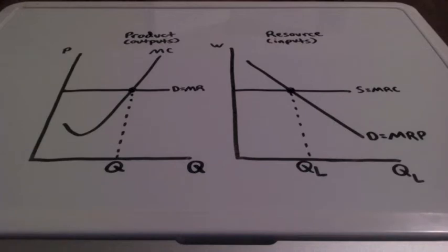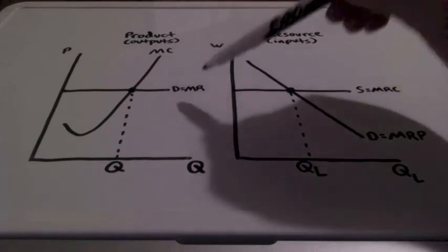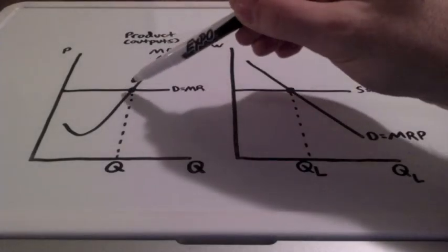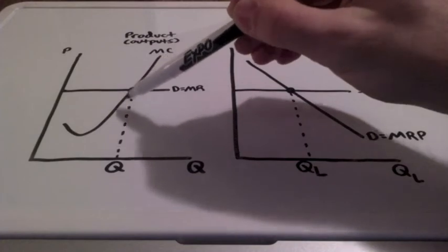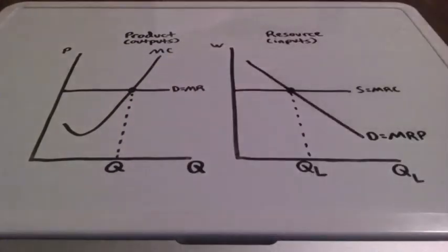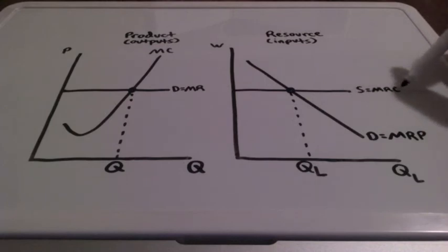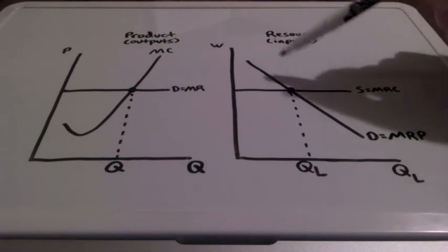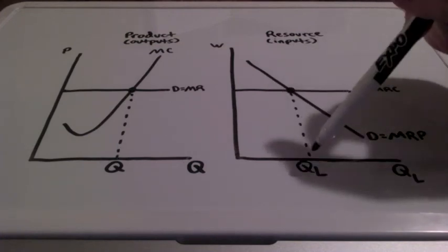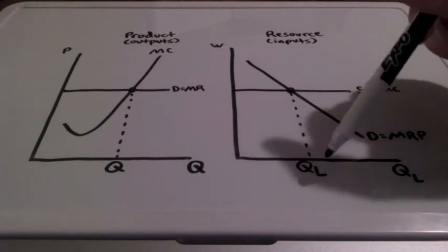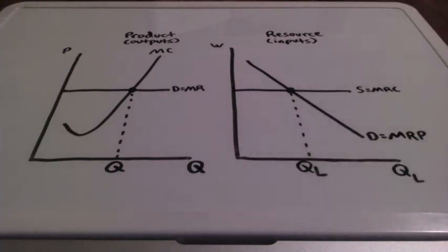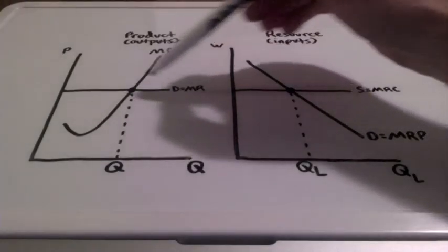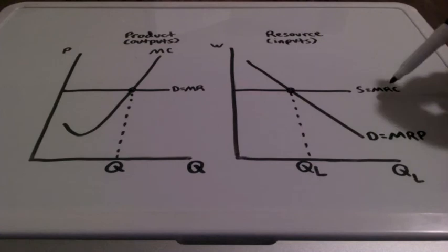In the product market, a firm is going to produce where marginal revenue equals marginal cost. This intersection represents the quantity of output that a firm is going to produce. In the resource market, a firm is going to hire where the marginal resource cost equals the marginal revenue product. QL represents the number of laborers that this particular firm is going to hire.